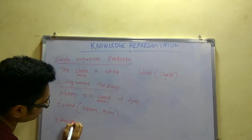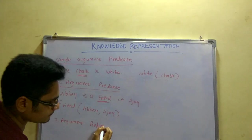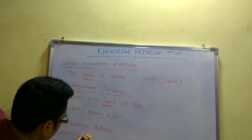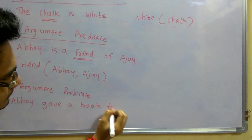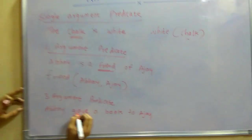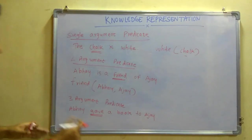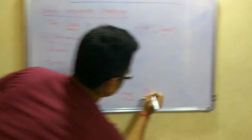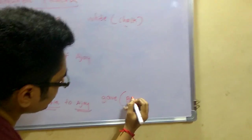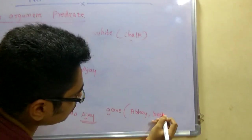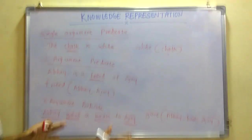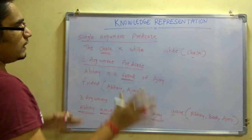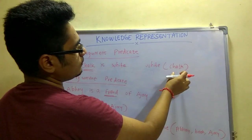Next we have the three argument predicate. The statement is 'Abhay gave a book to Ajay.' Here 'give' is the connecting link. Abhay, book, and Ajay are all nouns, so we write give(Abhay, book, Ajay). Reading this gives us 'Abhay gave a book to Ajay.' Since three parameters are present, this is a three argument predicate. Arguments essentially include the nouns in the sentence.